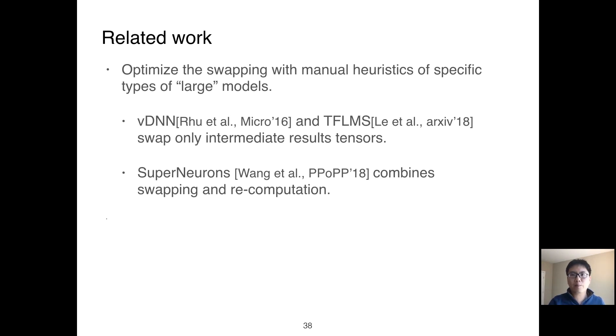Some existing work has been proposed to support DNN swapping. The approach of existing work is to analyze the dataflow graph with specific types of large models to perform optimization. For example, vDNN and TFLMS swap only activation tensors as they focus on deeper models where activation tensors may dominate memory usage. Another work, SuperNeurons, combines the recomputation technique with swapping. However, it only swaps tensors related to convolutional operators. This assumption limits the use cases for the existing work.